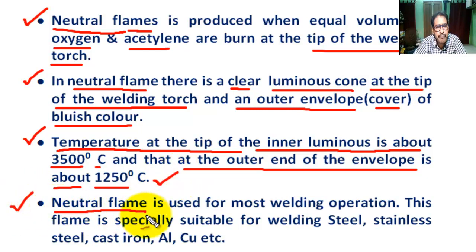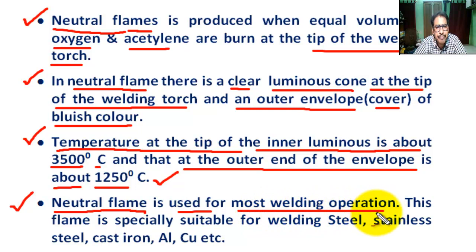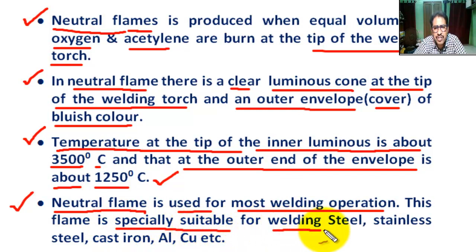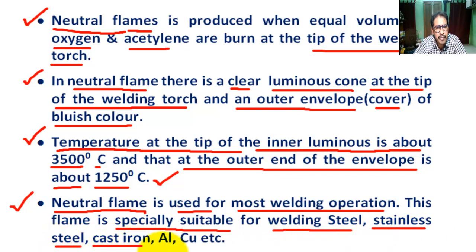Neutral flame is used for most welding operations. This flame is especially suitable for welding steel, stainless steel, cast iron, aluminium, copper, etc.